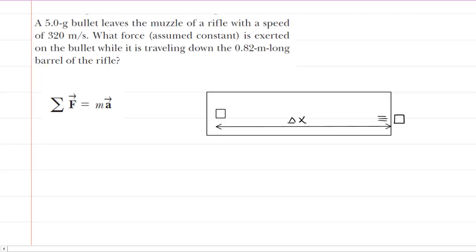So this question asks us to determine the force that's exerted on a bullet as it travels down the length of a rifle barrel. And we've learned in this chapter that the sum of the forces that are acting on the bullet would equal the mass of the bullet times the bullet's acceleration.